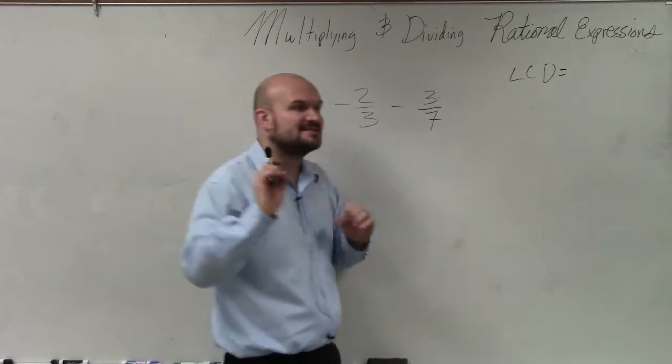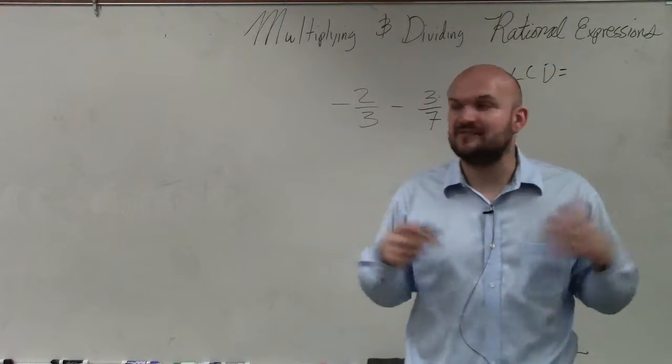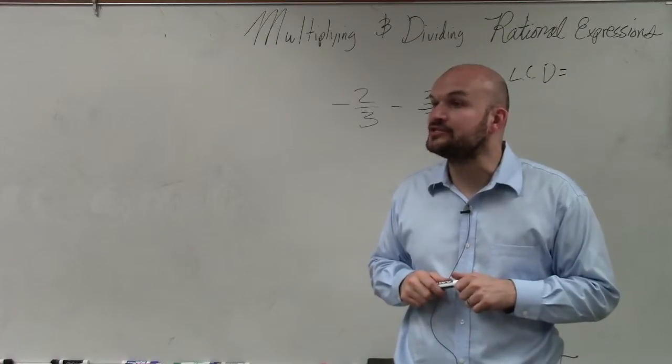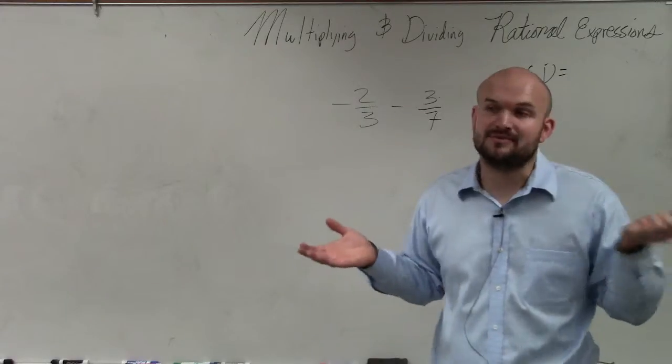However, ladies and gentlemen, that does not always provide you with the least common denominator. And for example, I'll give you two numbers. If I said find the LCD of 9 and 2, you would multiply 9 and 2, and that would give you 18, which is the least common denominator.